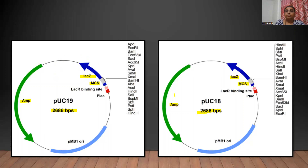Both of the plasmids encode a part of the beta-galactosidase, which is the alpha-peptide. The lacZα allows the coding of the alpha-peptide, which is involved in alpha-complementation.